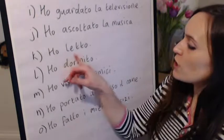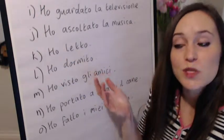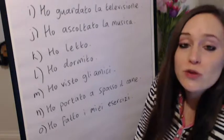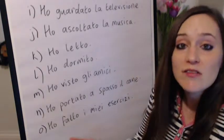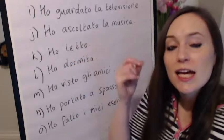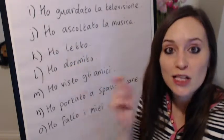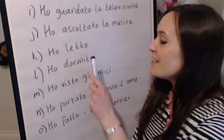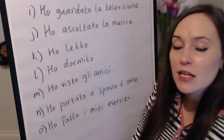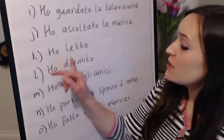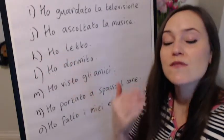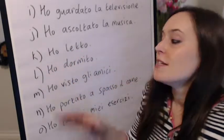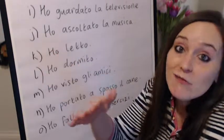One thing that can be confusing is the word letto. Here it's a past participle meaning 'read' — ho letto un libro, ho letto il giornale, I read the paper. Letto as a noun — un letto, il letto — means 'a bed'. Don't be surprised if you see that word and think it means something to do with a bed. But if it's got conjugations of avere in front of it, like ho letto or abbiamo letto, it means 'I have read' or 'we have read'.